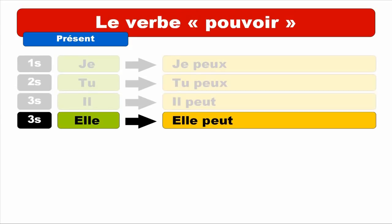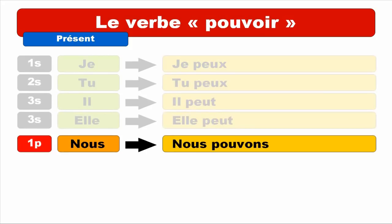Let's see how it goes for the plural. Be careful because for NOUS it changes a little bit. NOUS POUVONS. You write OU and you pronounce it OU. Final S not pronounced. NOUS POUVONS. Repeat. NOUS POUVONS.